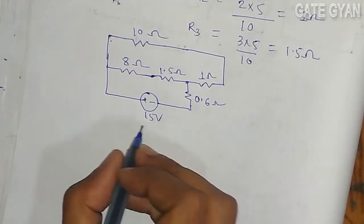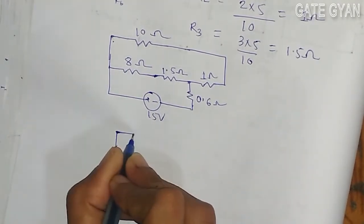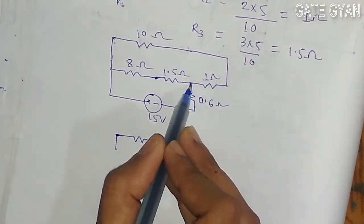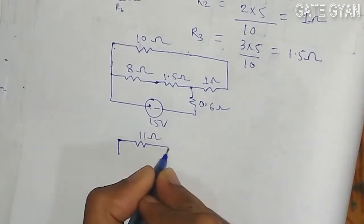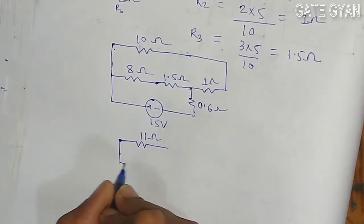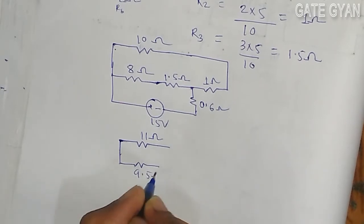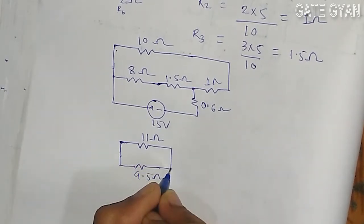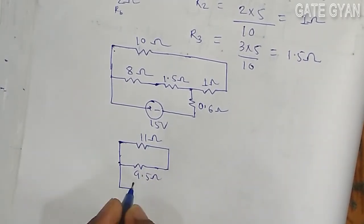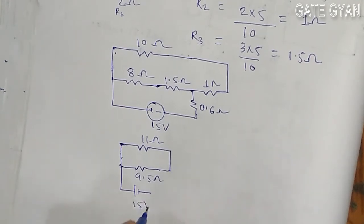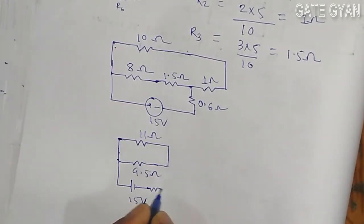Plus minus 15 volt along with this connection. Now I will more simplify, so how it will look like: 10 ohm and 1 ohm are in series so it is going to be 11 ohm. This 8 and 1.5 ohm is going to be 9.5 ohm, and this is 15 volt along with a resistance of 0.6 ohm.